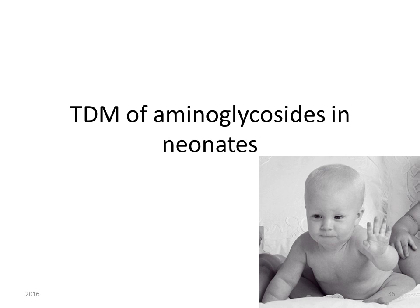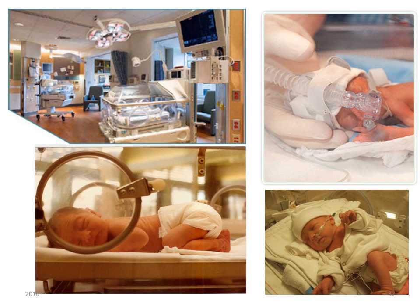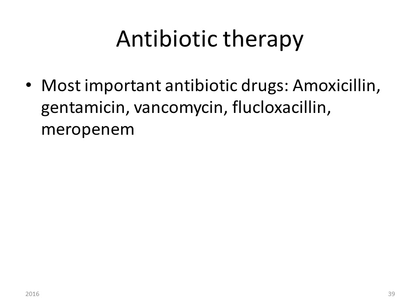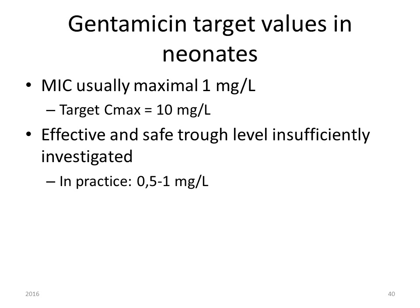Next, we'll discuss the particular problems encountered when performing therapeutic drug monitoring in neonates, especially with aminoglycosides. A normal baby is between three and four kilograms, but neonates can be as little as half a kilogram. Children are not little adults — they develop rapidly in the first weeks after birth and it's important to know these changes. The most important antibiotics used in neonates are amoxicillin, gentamicin, vancomycin, flucloxacillin, and meropenem.